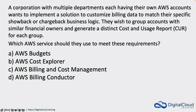Let's break that down. They've got multiple accounts with lots of billing data, and they want to do what's called showback or chargeback — either showing different departments how much they've spent on AWS, or actually charging them for it. In order to do that, they need to group the accounts with similar financial owners and generate distinct cost and usage reports for each group. That's how they'll break out the itemised bill into the different departments. So what service will allow them to do that?